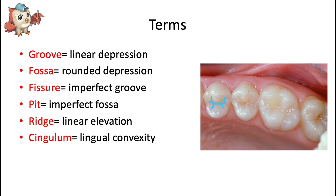A fissure is a deeper-than-normal groove where there was an imperfect union between developmental lobes. A pit is a place where grooves or fissures come together to create a small pinpoint depression — this is where decay most often begins. That's why sealants are often placed in pits and fissures to prevent decay in those areas that are most susceptible and hardest for the patient to clean. Tooth number 13, for example, has a mesial and a distal pit.